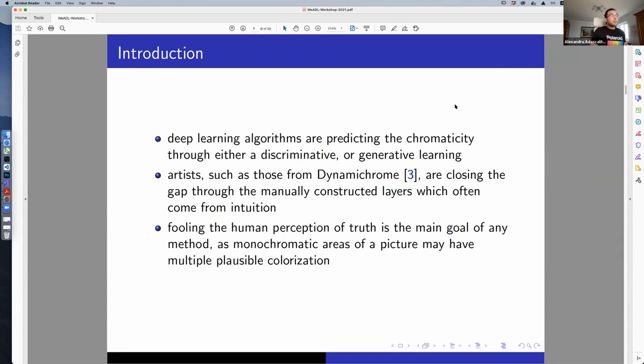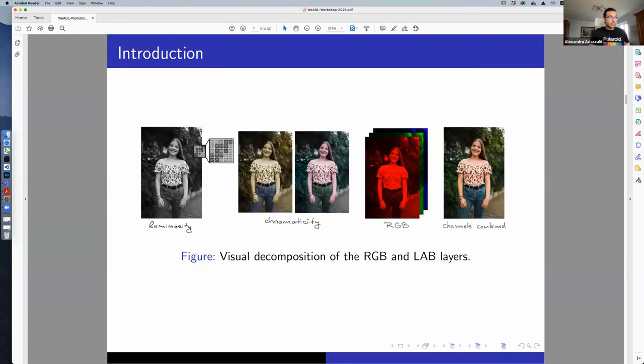In this problem, fooling the human perception of truth is the main goal of any method. It's not to recreate the colors that were there originally, because monochromatic areas may have multiple plausible colorizations. This is a tough problem to solve.